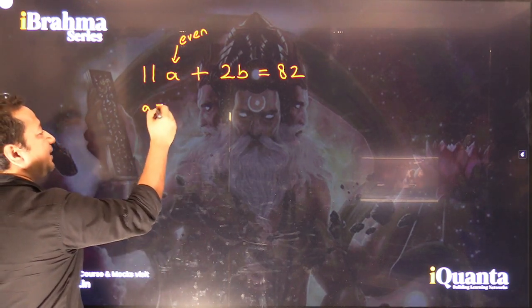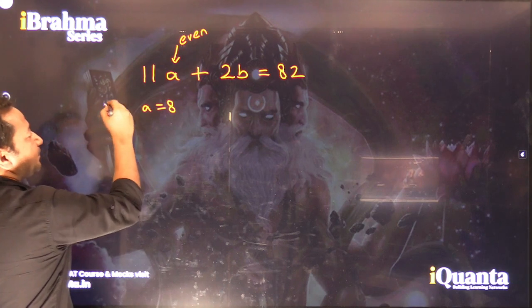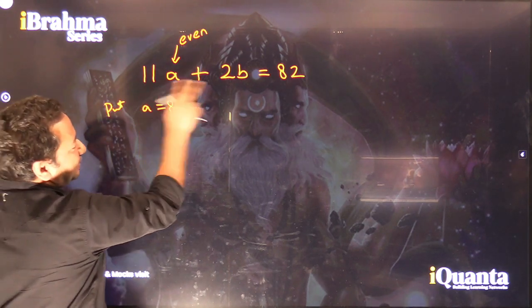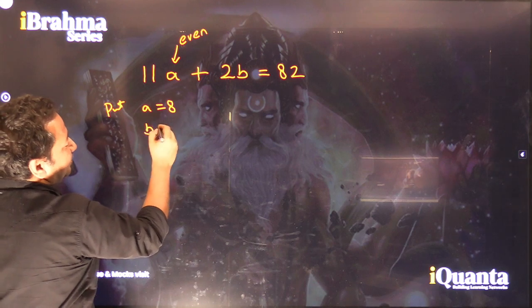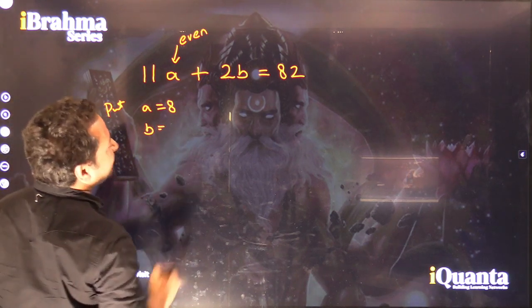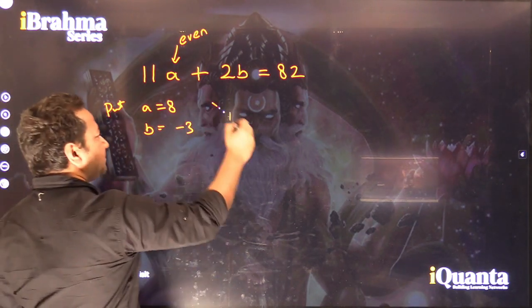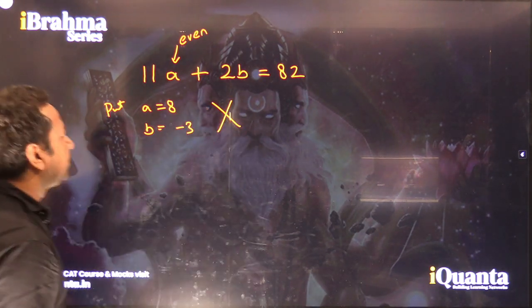So if I put A as 8, we get 11 × 8 = 88. So B will be equal to -3, which is of course not possible.